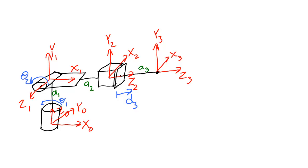Let's take a look at a second rotation matrix example. I'm showing here the kinematic diagram of a spherical manipulator. We want to find the rotation matrices for each of the frame pairs in this kinematic diagram: the rotation from zero to one, the rotation from one to two, and the rotation from two to three.